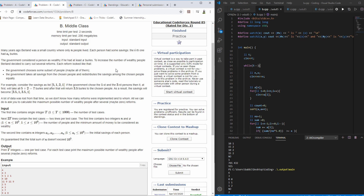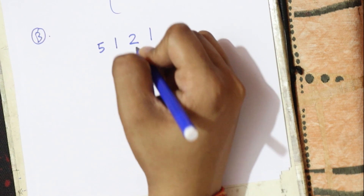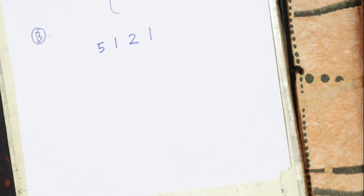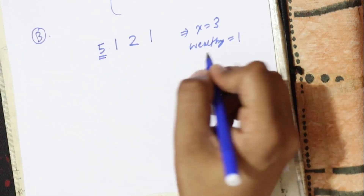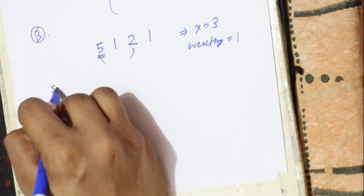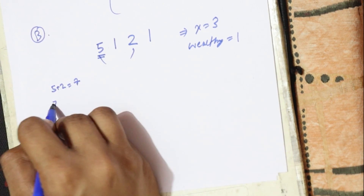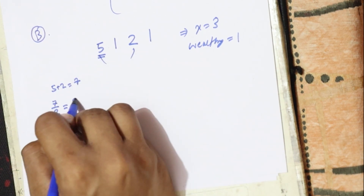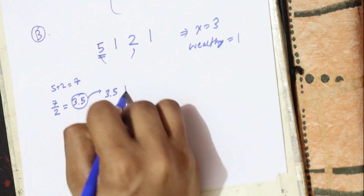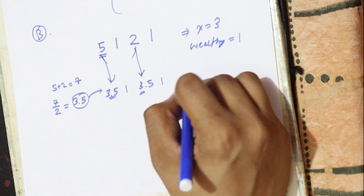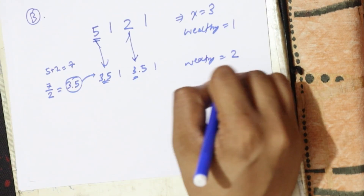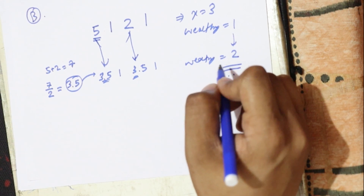To increase the number of wealthy people, we can redistribute burls. For example, with [5, 1, 2, 1] and x equal to 3, currently only one person is wealthy (the one with 5). But if we take 5 and 2, their sum is 7, and redistributed among 2 people gives 3.5 each. So the array becomes [3.5, 1, 3.5, 1], and now 2 people are wealthy.